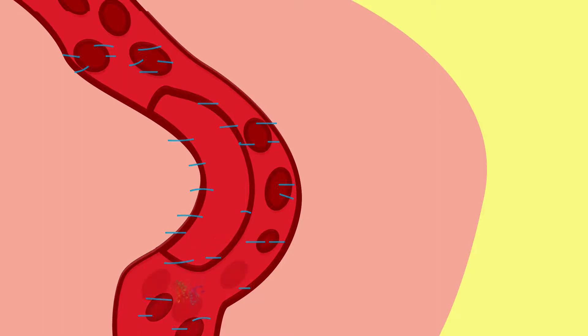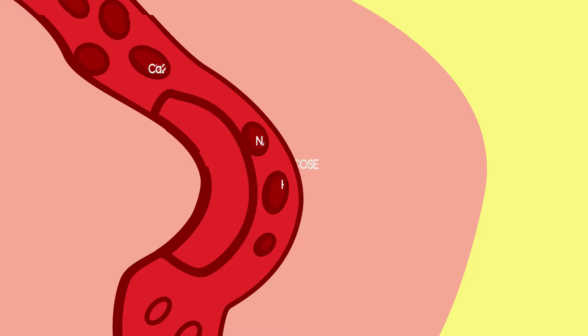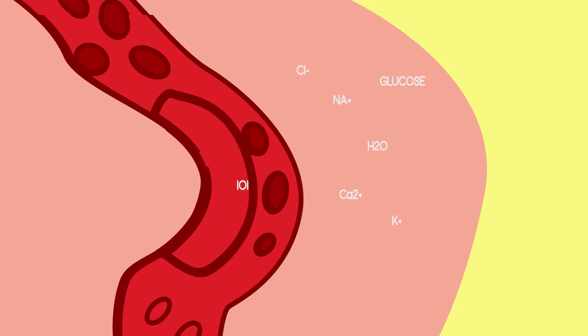What does leave the glomerulus, however, entering the Bowman's capsule surrounding the glomerulus, includes water, glucose, sodium, potassium, calcium, chloride, and other ions.